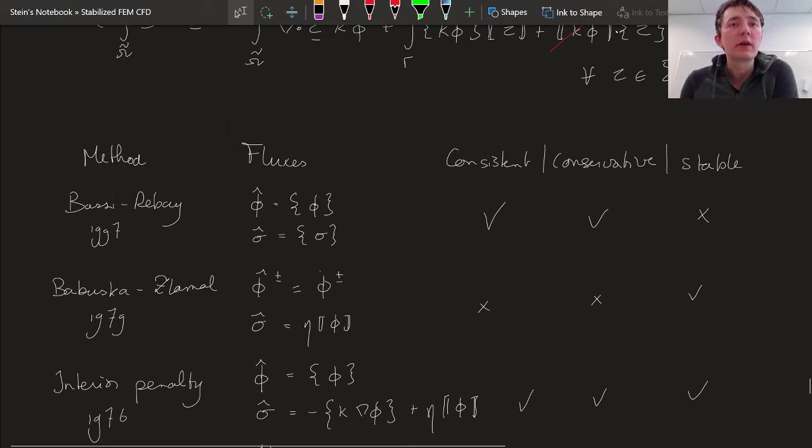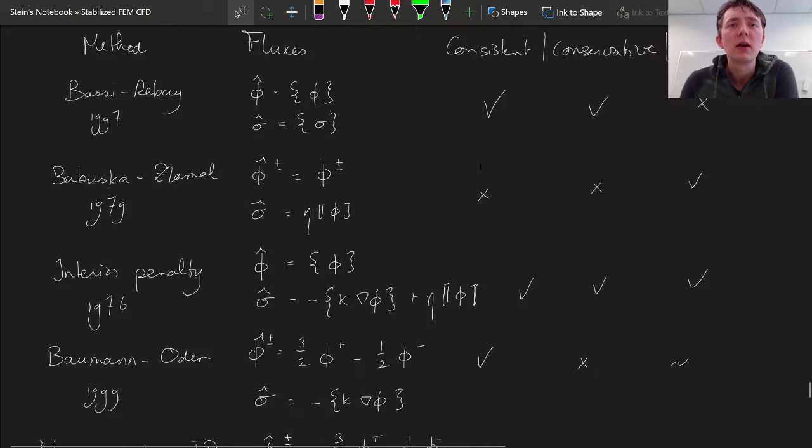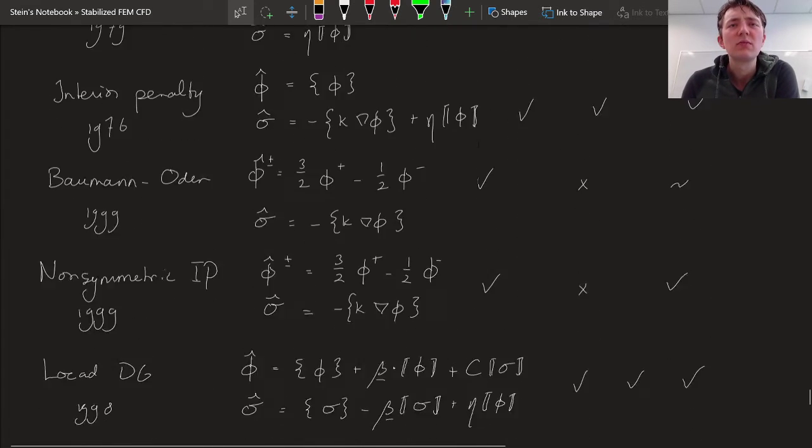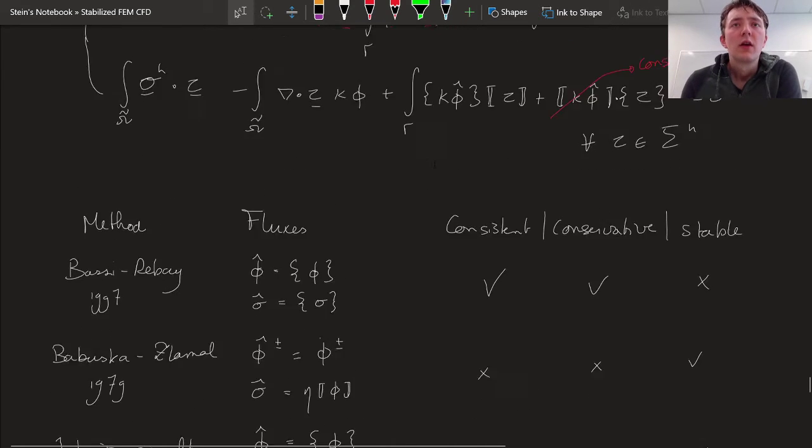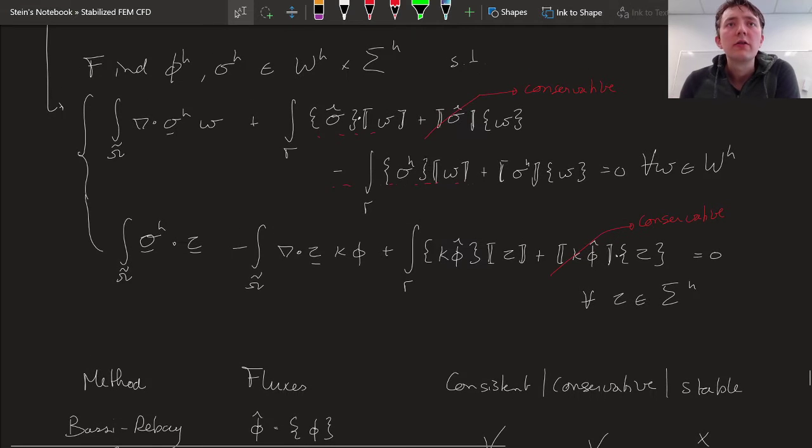So I don't think I ordered them in any particular way, maybe in terms of complexity. Yeah, probably that's it, I think I ordered these in terms of complexity. So recall our finite element formulation, where we have wh and sigma h as our discontinuous Galerkin approximation spaces.